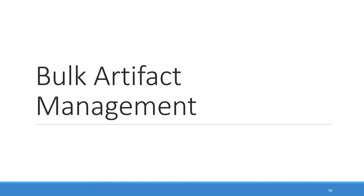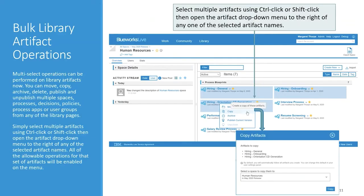Now let's look at how you can do bulk artifact management. Multi-select operations can now be performed on library artifacts. When you need to move, copy, archive, delete, publish, or unpublish multiple spaces, processes, decisions, policies, process apps, or even user groups all at the same time, you can do that from any of the library pages. You just select multiple artifacts using Control+Click or Shift+Click depending on whether they're contiguous or not, and then open the artifact dropdown menu to the right of any of the selected items.